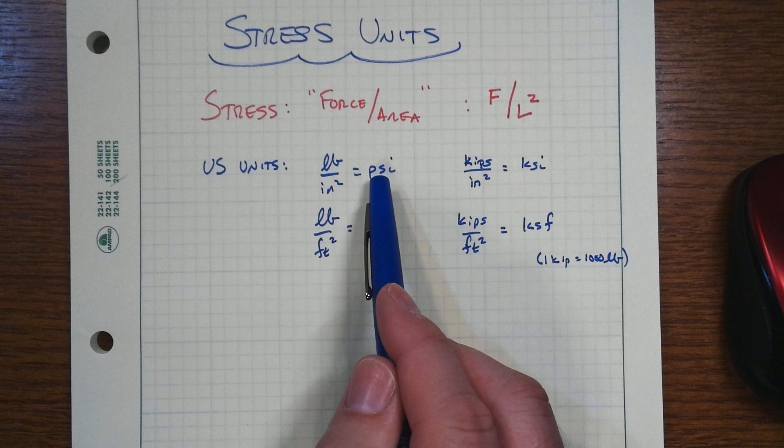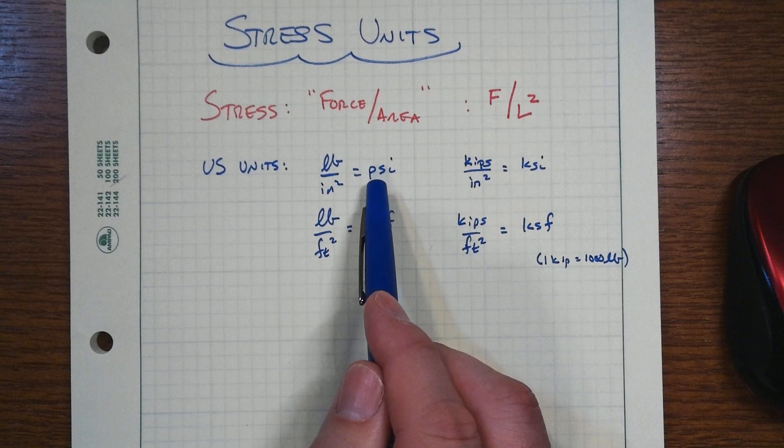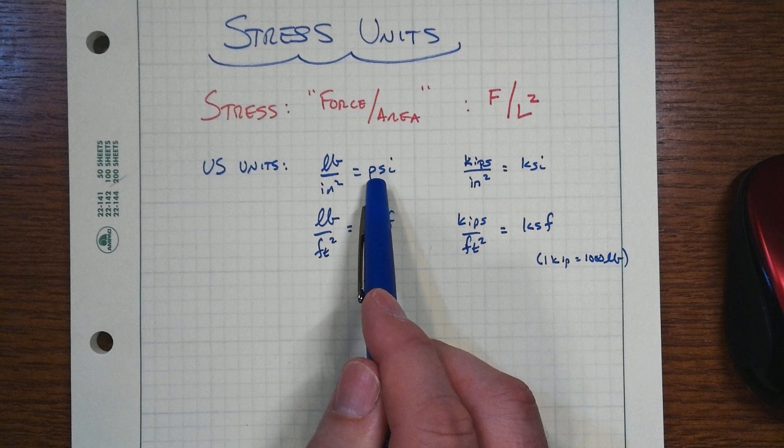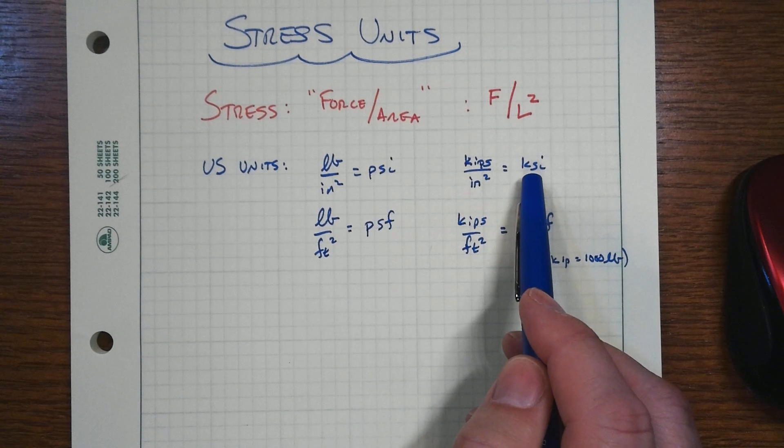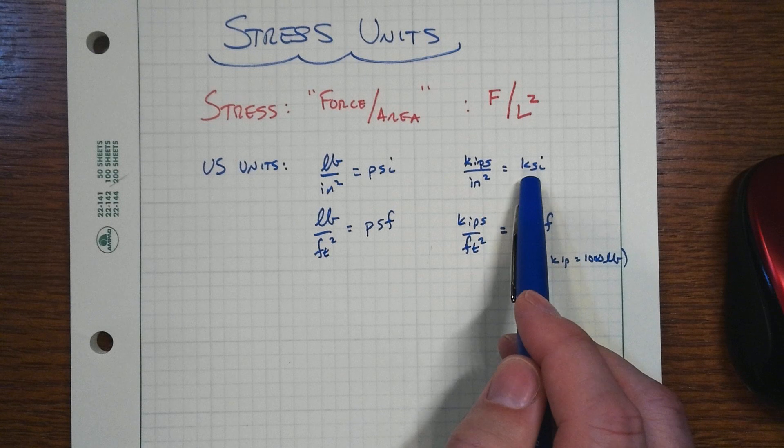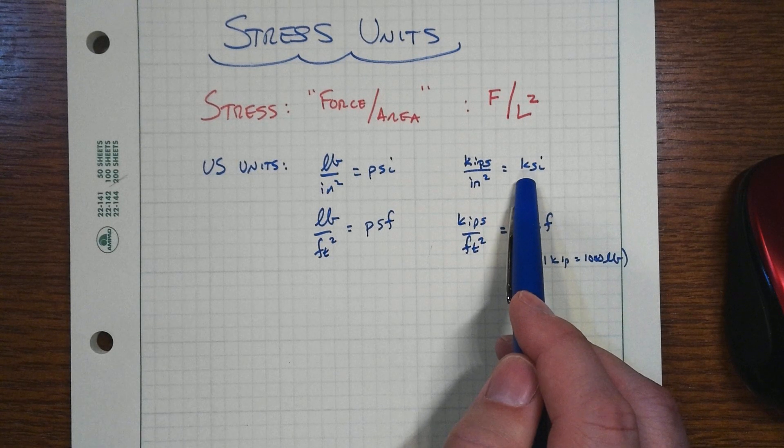We have concretes that can be made much stronger than that. But typically high-strength concretes start around the 6,000 PSI range. Whereas in terms of strength, the steels, these days, a relatively low strength is about 36 KSI.